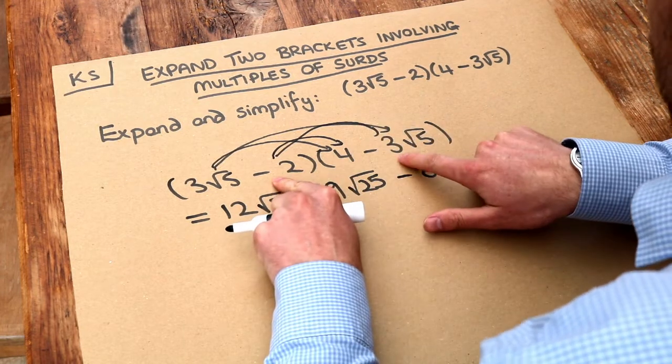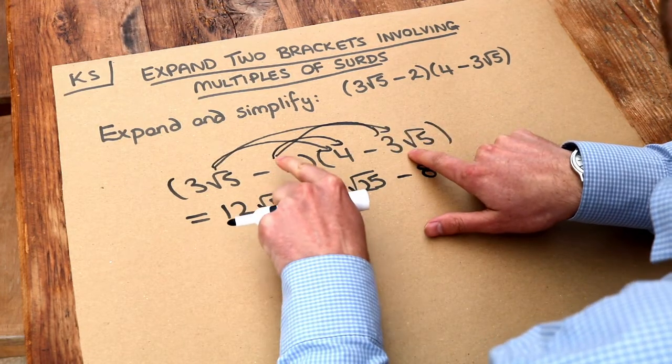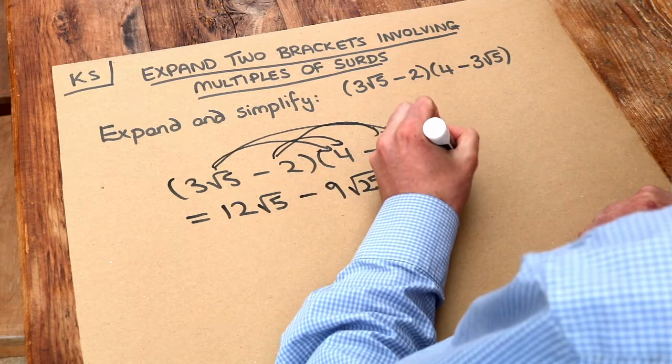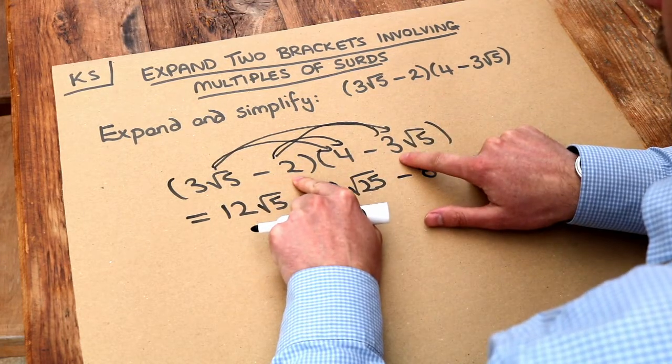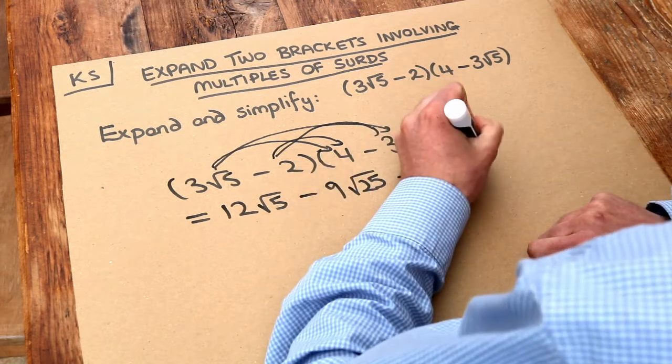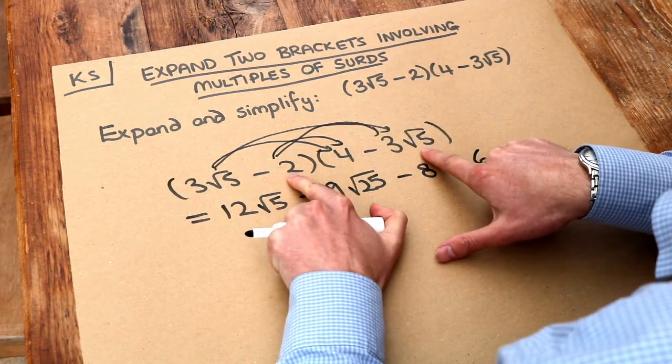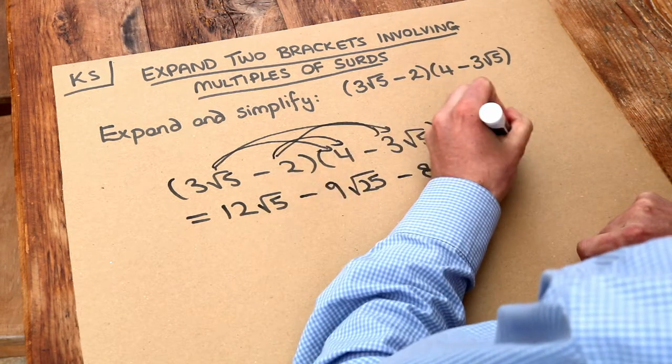And we do the negative two times negative three root five. Well, negative times negative is positive. Let's get the sign right first. We multiply the non-surds together, so two times three is six, and then we multiply the surds together. Well, we've only got the root five, so we just got the root five there.